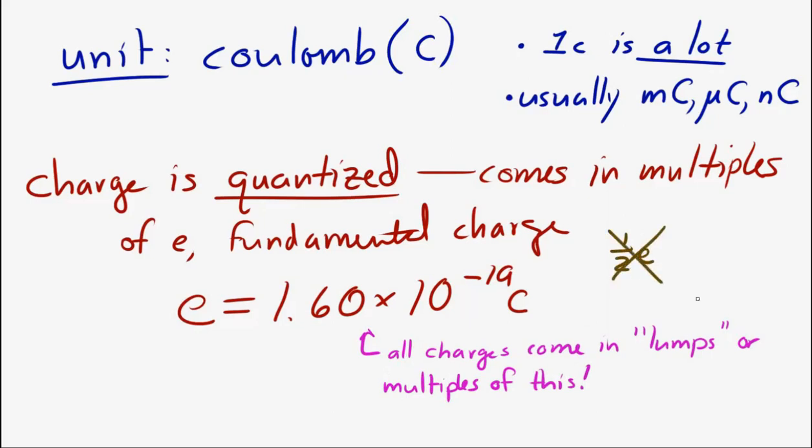You will never find two thirds of the fundamental charge on an object or 1.2 of the fundamental charge on an object. You will only find the fundamental charge, twice the fundamental charge, 3 times, 4 times, 5 times, 6 times, 7 times, 8 times, 9 times, 10 times, and so on. Nothing can carry less than the fundamental charge and nothing can carry a fraction of the fundamental charge.